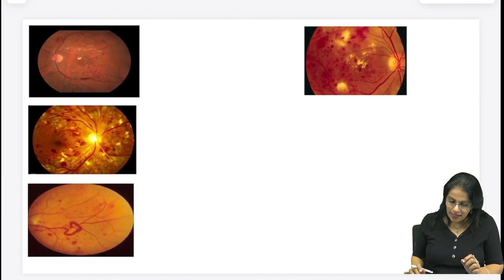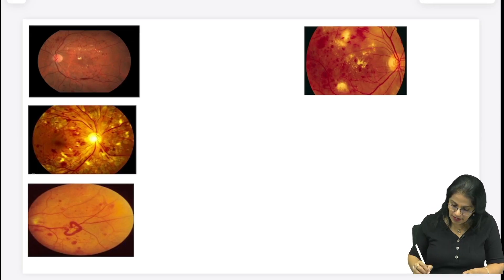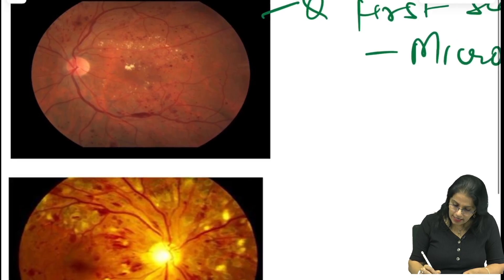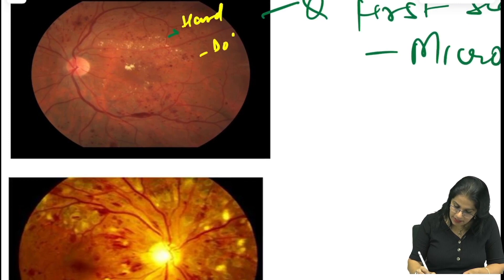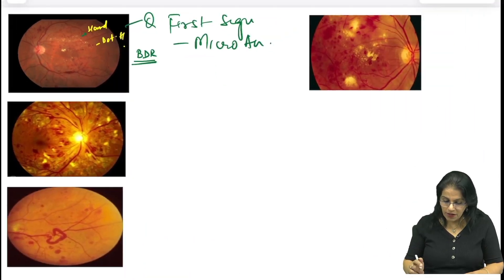Clinical features pe aate hai. Clinical feature padhenge, slides dekhte hai. Sabse pehle staging kaisa aapse pehle basic pehle samajhte hai. Initially sabse first sign kya hota hai? Yeh sawal aaya hua hai. First sign of diabetic retinopathy? Aap bologe microaneurysms. Uske baad dhire dhire kya hoga? Microaneurysms ke baad aapko dhyan se dekho yaha pe. Yeh aapko hard exudates hoga hai. Yeh wale hard exudates hoga hai. Yeh dot and blot hemorrhage hoga hai. To ye saare features kya hai? Background diabetic retinopathy. First stage yeh hota hai background, jis me aapko microaneurysm mila, aapko hemorrhages mila hai dot and blot or flame shape, dono mil sakti hai, or exudates mila hai.